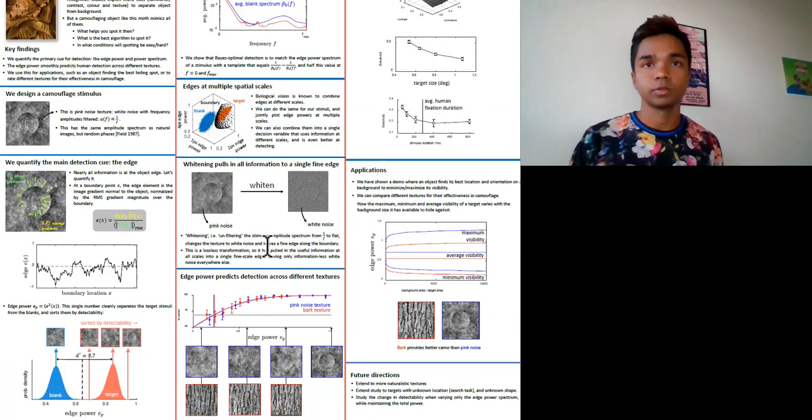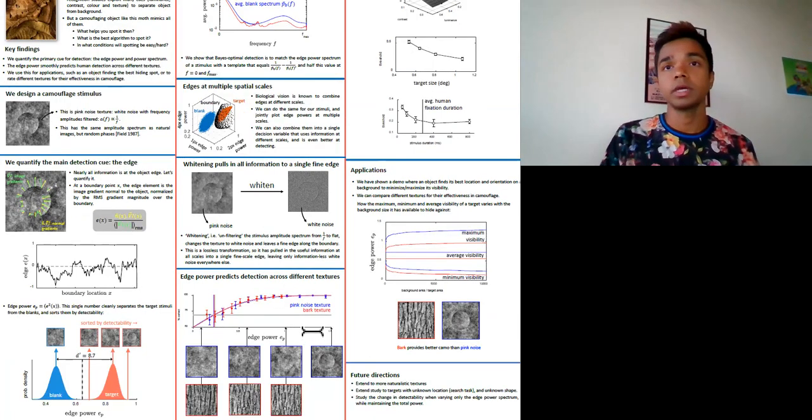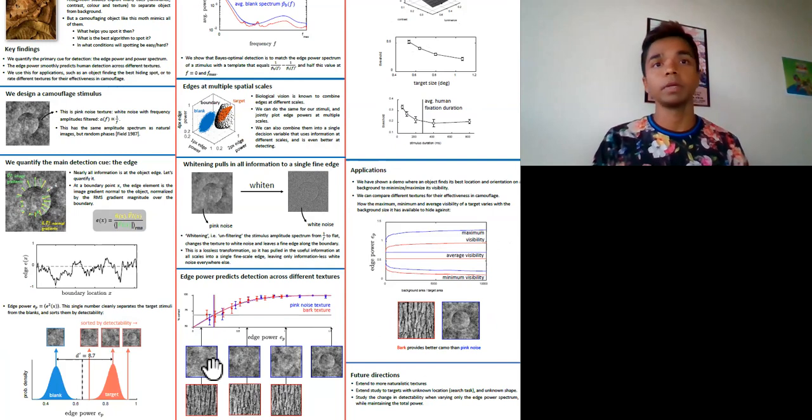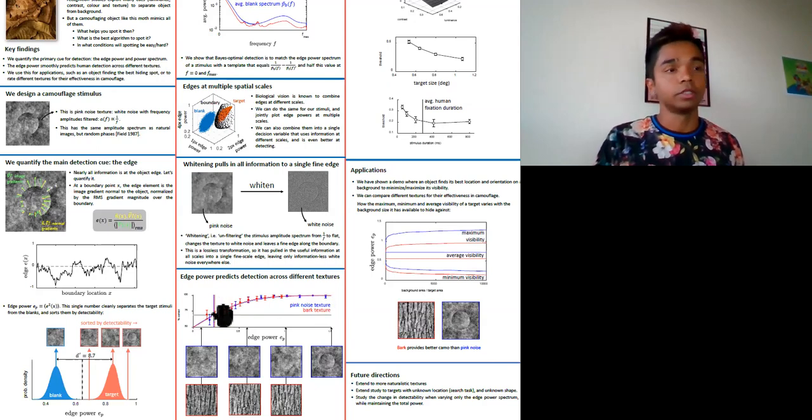Okay, now let's talk about the experiments. We have performed psychophysics on humans using both pink noise and a more naturalistic bark texture, and we see that detection performance is smoothly and identically predicted by the edge power in both textures. So we can fit a psychometric function to this and extract a detection threshold.